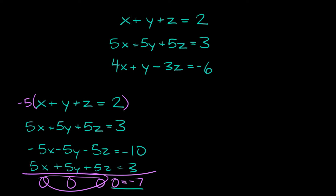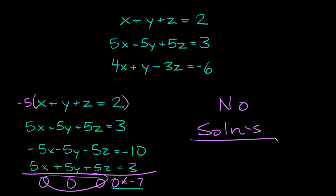Now this is obviously a false statement — this is a flat-out lie. 0 is not equal to negative 7. So if you ever get where some number is not equal to some other number, then that means your system of equations actually has no solutions. No solutions — so that's the first special case.